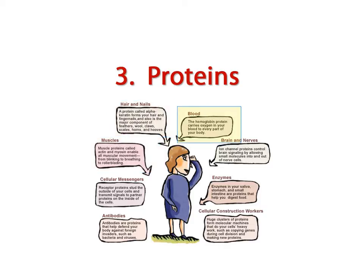Transport proteins are carrier proteins which move molecules from one place to another around the body. An example would be hemoglobin, which functions to transport oxygen and carbon dioxide throughout the blood. Thousands of hemoglobin molecules are packed into every red blood cell in the body, and you will hear more about hemoglobin when we get into the respiratory system.